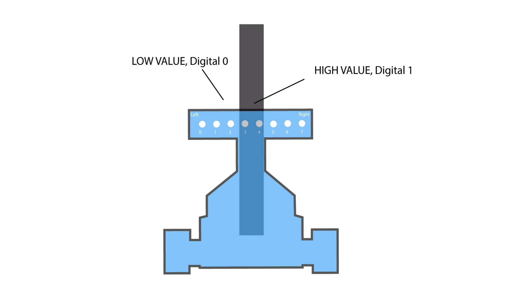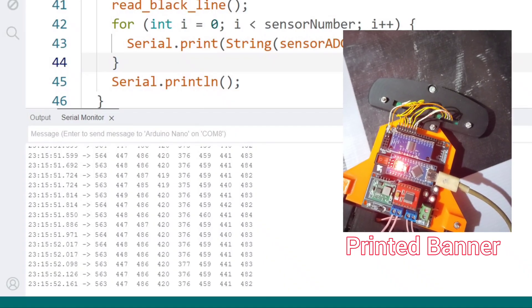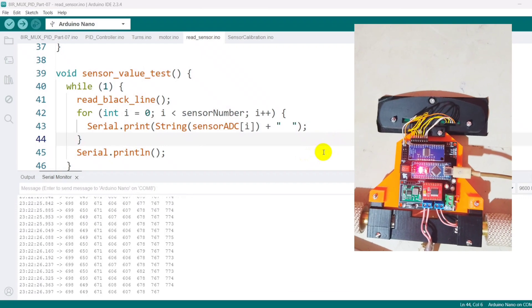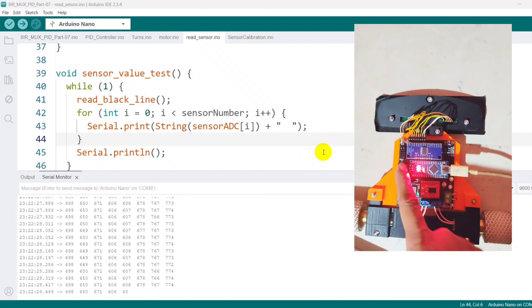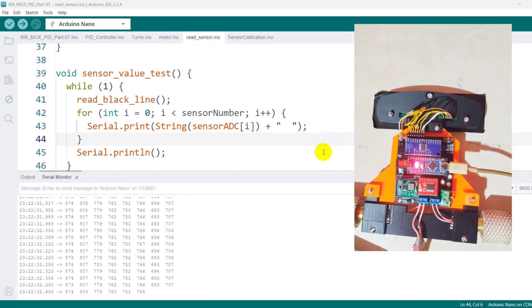Now, let's understand why line calibration is important. Normally, we get high analog values from a black surface and low analog values from a white surface. Printed banner surfaces are not fully black, so we often don't get the maximum possible analog value from them. On the other hand, if we use regular tape, which is pure black, we get higher analog values. These readings also vary depending on the contrast of different tracks.